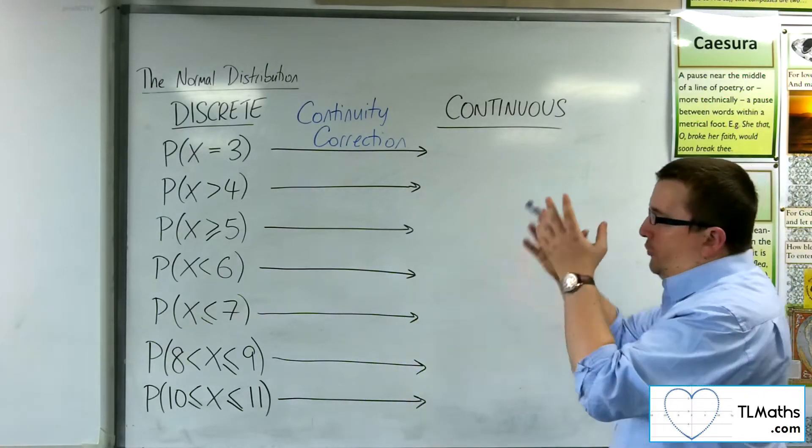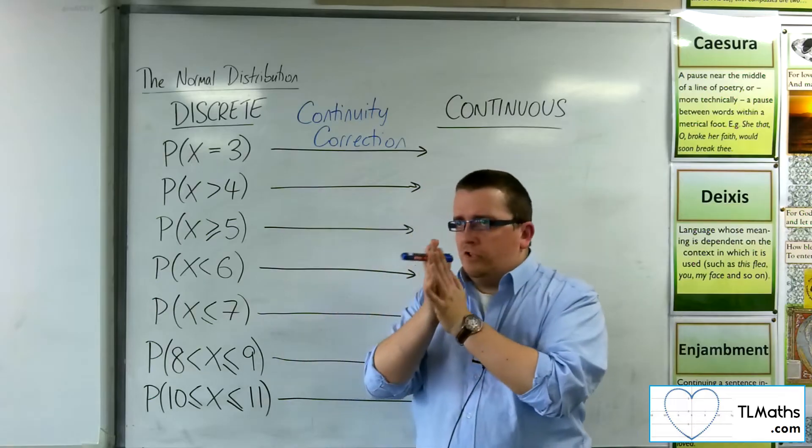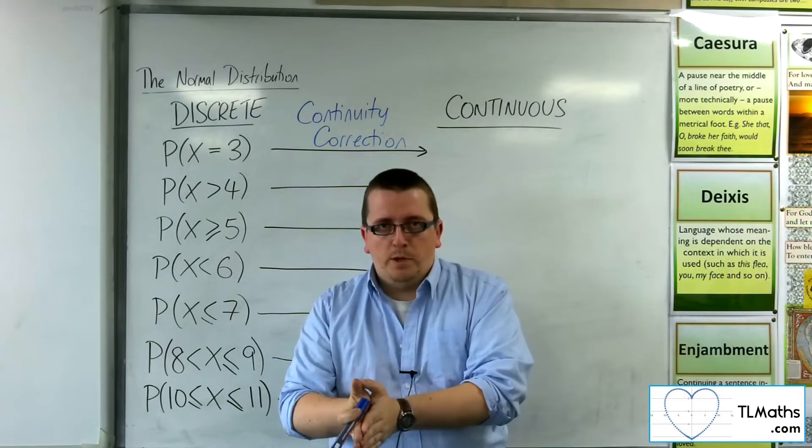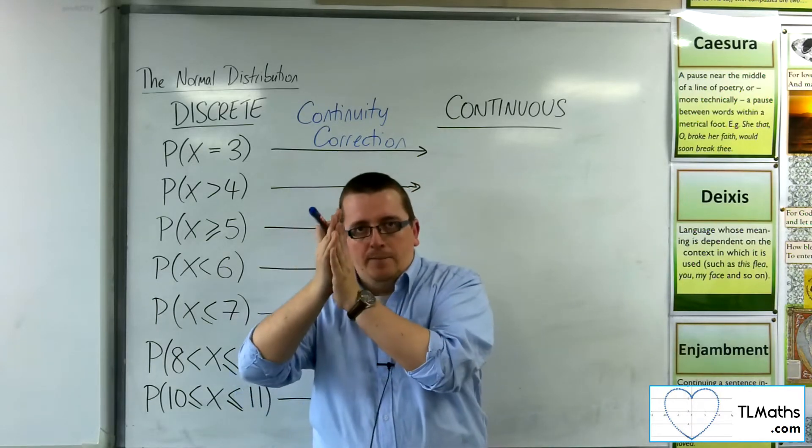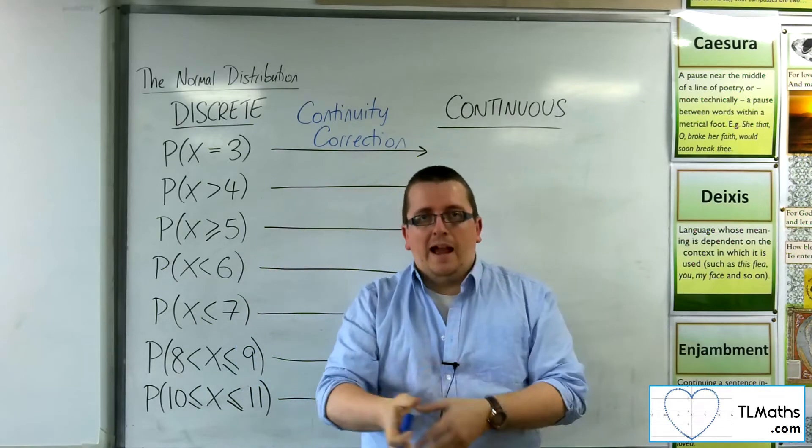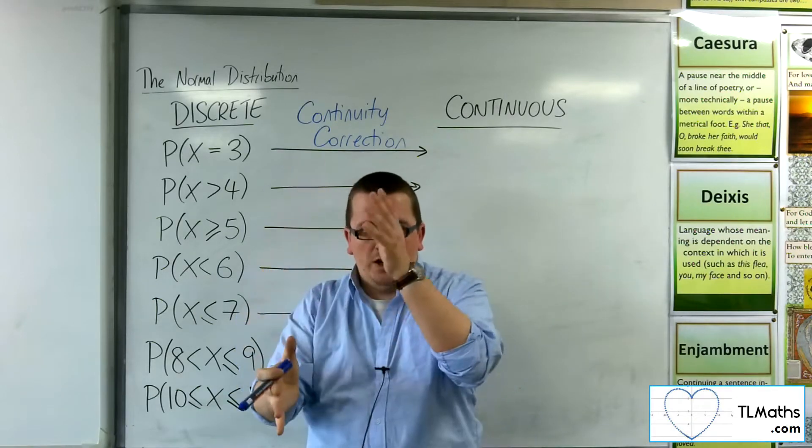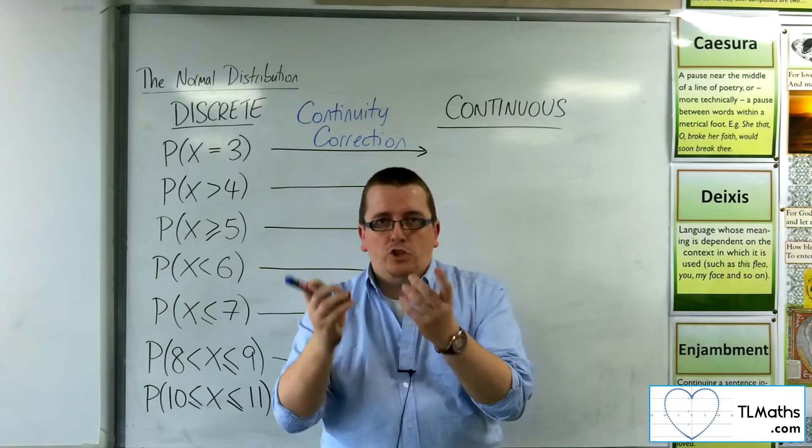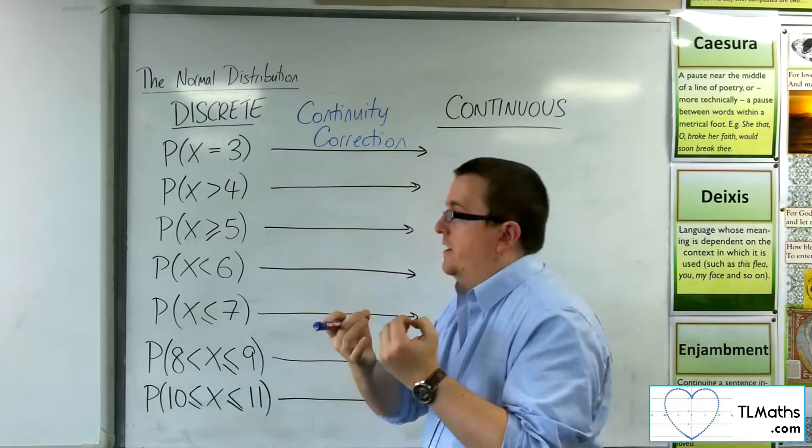What you've got to imagine is that the discrete distribution, the binomial distribution, is like our lines. Now imagine it like a bar chart where each of the numbers is centered at a bar.